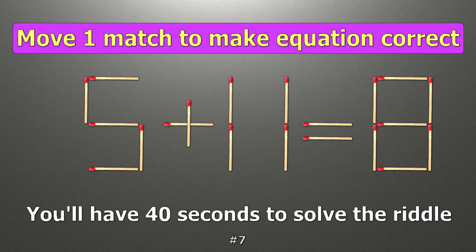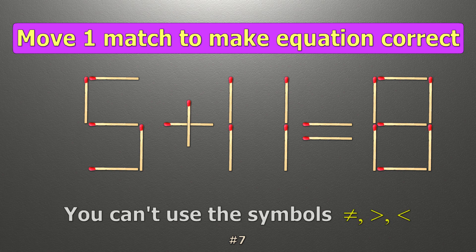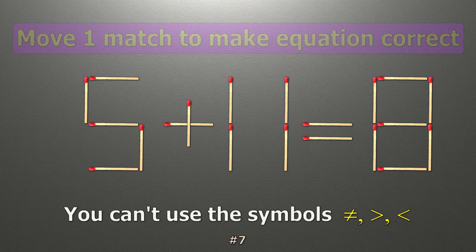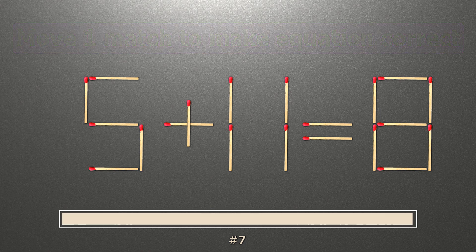We have the equality 5 plus 11 equals 8. Our equality is wrong. We need to move one match to make our equality correct.